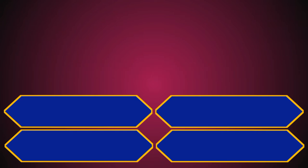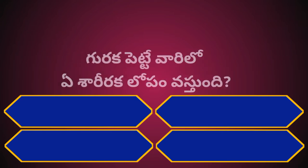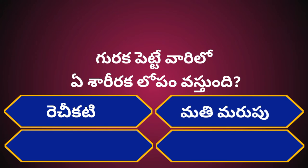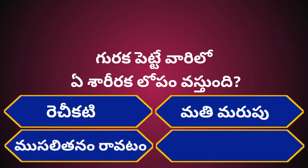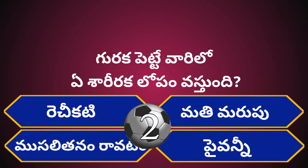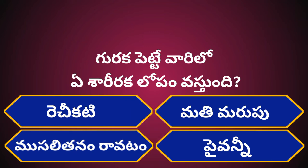Question No. 4. Guraqa pettie vahari lho A. Sharii irakal opam Vosthundi. Options: A. H.E. Katti, B. Mati marpu, C. Musalitan, D. 580. Your time starts now. Correct answer is C. Musalitan.